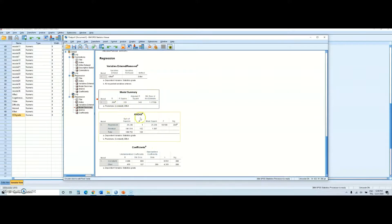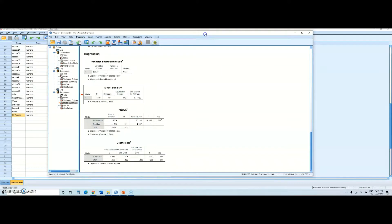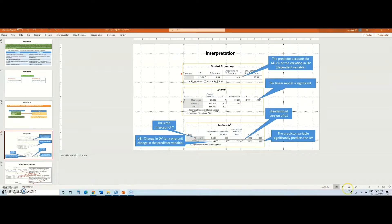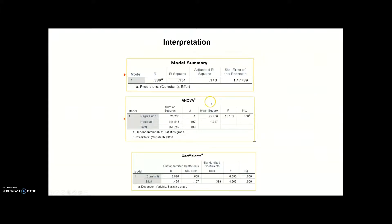You will get a model summary table, an ANOVA table, and a coefficients table. I will copy all this output to PowerPoint so it will be easier for us to interpret.